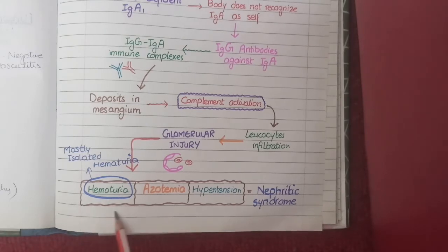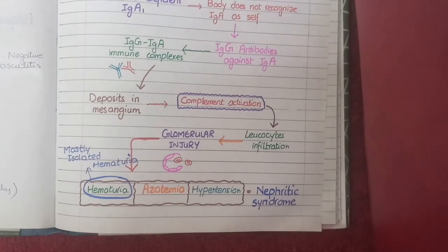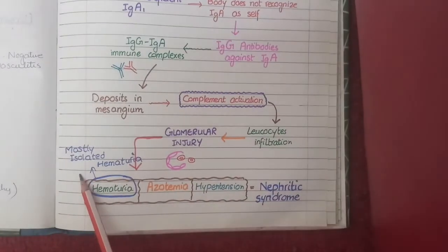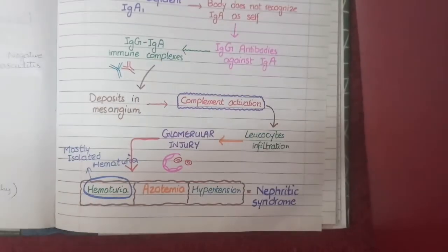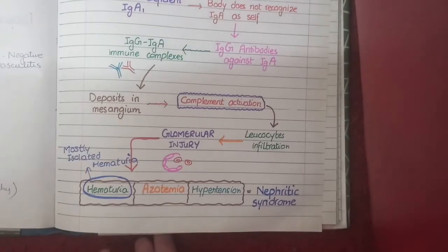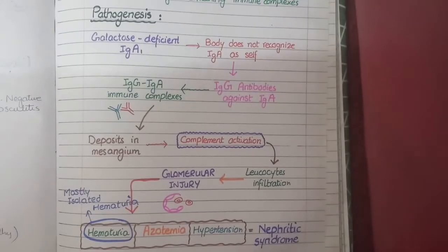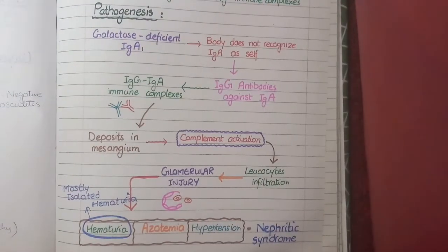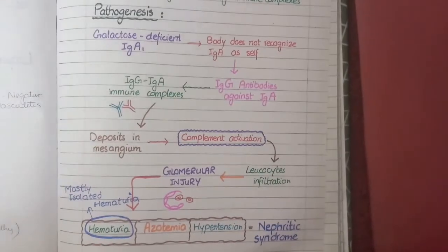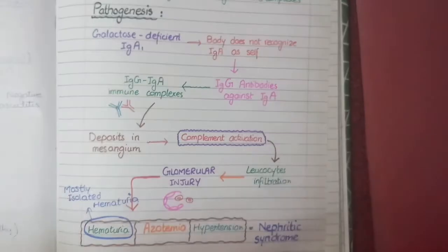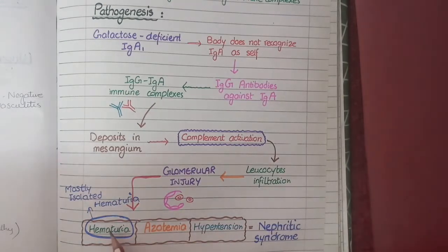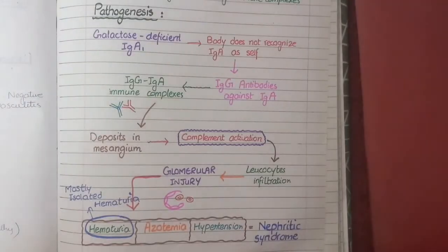However, this complete triad of nephritic syndrome is present rarely in IgA nephropathy; most patients present with isolated hematuria. Importantly, in IgA nephropathy the development of hematuria or nephritic syndrome occurs in episodes — there may be one episode of hematuria, then a period of recovery, and then another episode after some time. But why does this hematuria or nephritic syndrome develop in episodes?